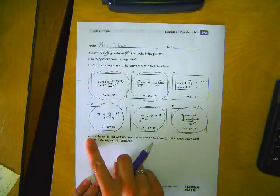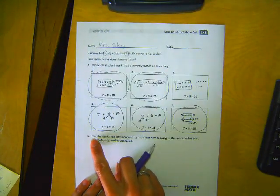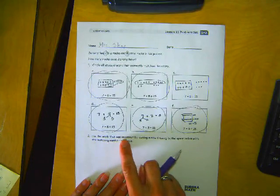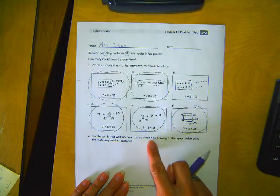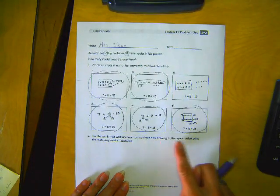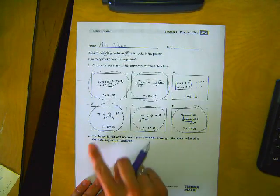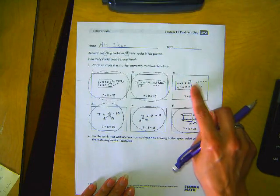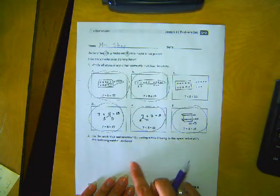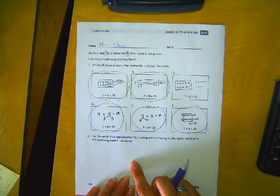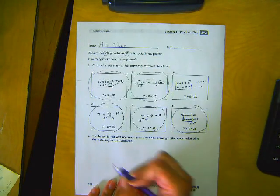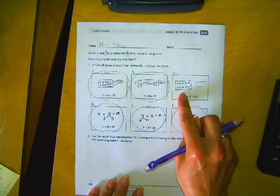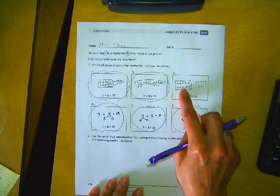All right. Number two. Fix the work that was incorrect by making a new drawing in the space below with the matching number sentence. So we have to fix this one. This is wrong. We have to make it right.